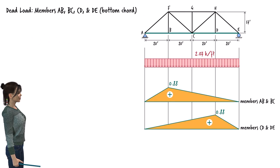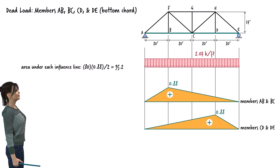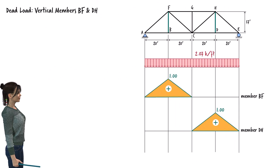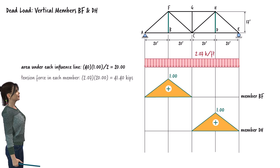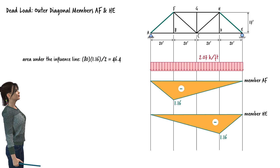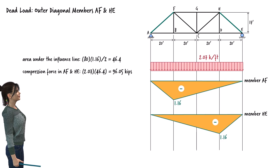We have two influence line diagrams for the members along the bottom chord of the truss. The area under each influence line is 35.2. Therefore, the axial force in each member equals 72.86 kips. Since the influence lines are drawn above the x-axis, the bottom chord members are in tension. For the vertical truss members, the area under each influence line is 20, resulting in a tensile force of 41.40 kips in each member. For diagonal members AF and HE, the area under each influence line equals 46.4, giving an axial compressive force of 96.05 kips in each member.